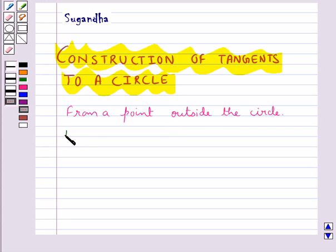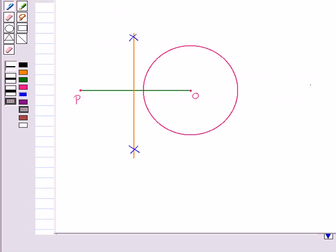Our first step here would be join PO and bisect it. We have joined PO and we have bisected this PO. Let's mark this point as M.